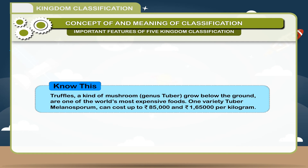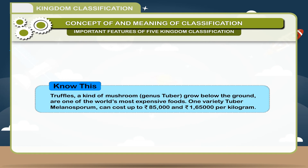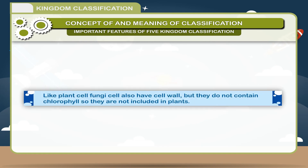Know this: Truffles, a kind of mushroom of genus Tuber, grow below the ground and are one of the world's most expensive foods. One variety, Tuber Melanosporum, can cost up to Rs. 85,000 to 1,65,000 per kilogram. Like plant cells, fungi cells also have a cell wall, but they do not contain chlorophyll, so they are not included in plants.